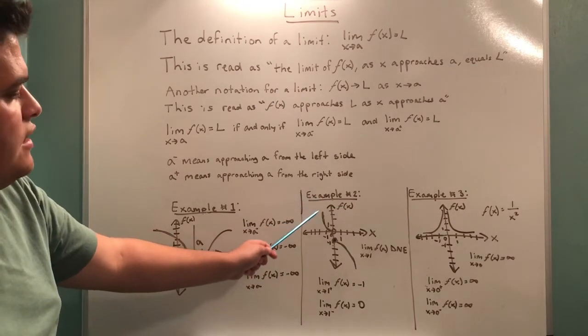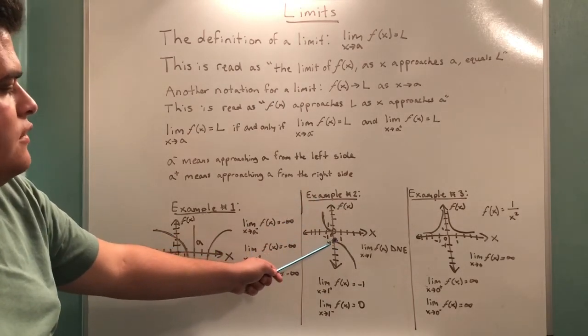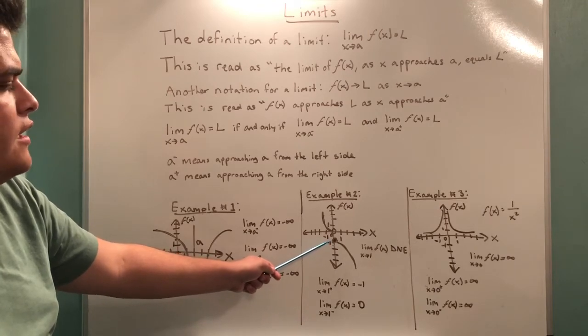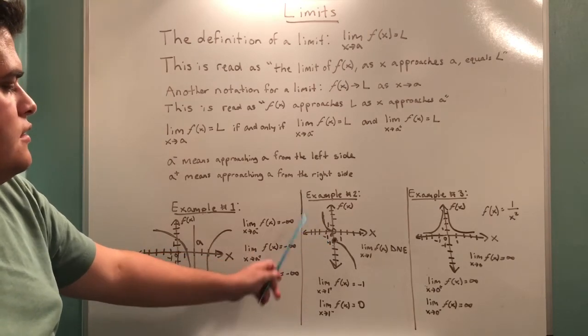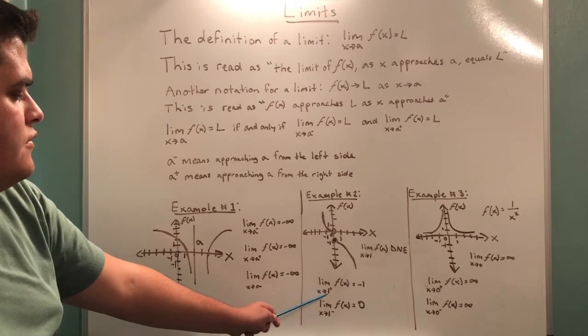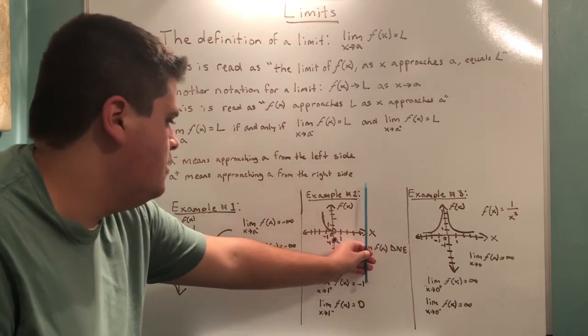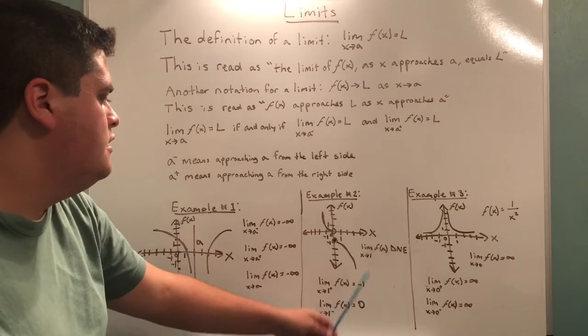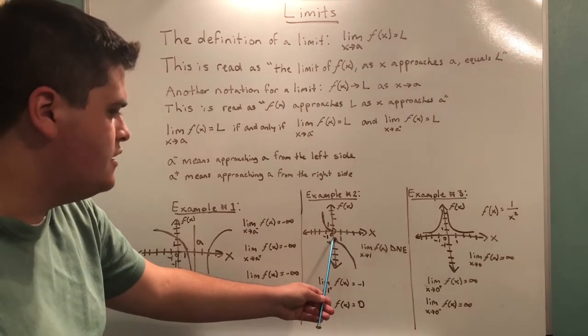For our second example, we have two curves. However, there is a discontinuity, a break, in our function. So the limit as x approaches 1 from the right. We start at the right and work our way left. The first value we reach is actually negative 1.